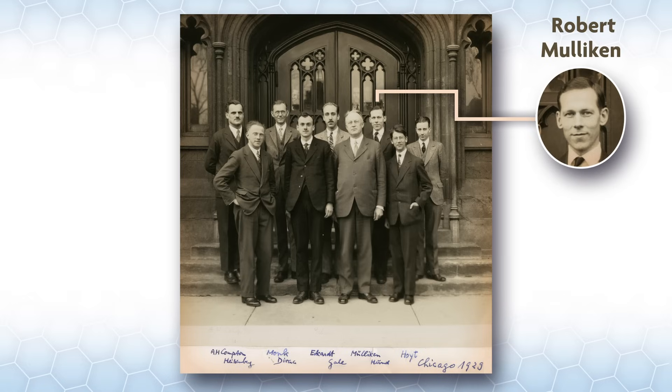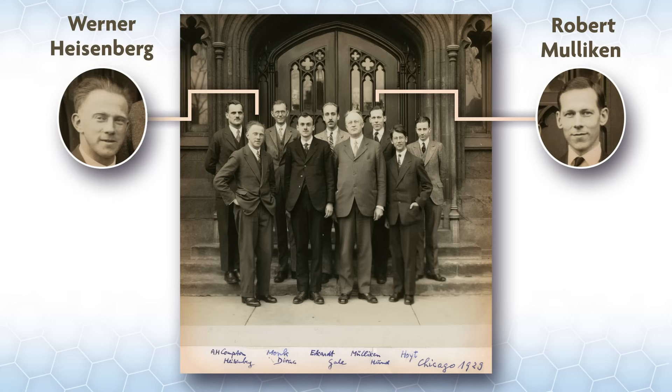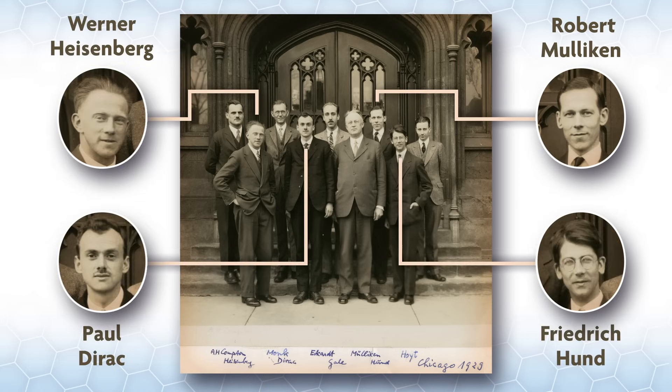Here, he is third from the right in the back with other notable scientists including Werner Heisenberg, Paul Dirac, and Friedrich Hund. Mulliken's MO theory was and is incredibly influential in chemistry and all but replaced valence bond theory by Lewis, Pauling, Coulson, and others. There is a bit of a resurgence in what I'll call hybridization theories which we can hopefully discuss in other videos.